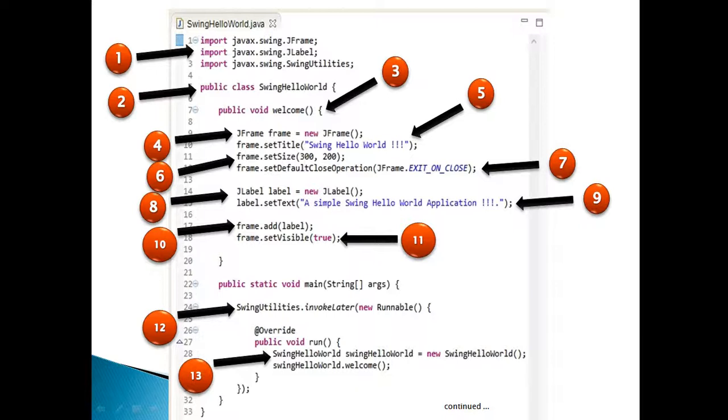Moving ahead. Step 11, by default, frame does not get visible. In order to make it visible call set visible method and place a boolean value as true. It finally makes frame visible when the program is run.